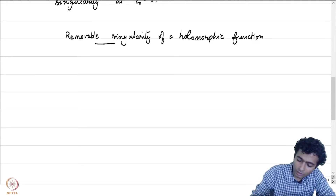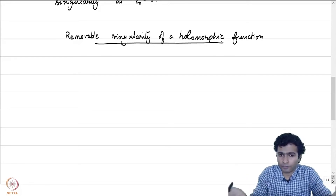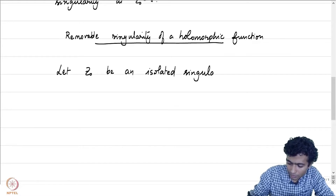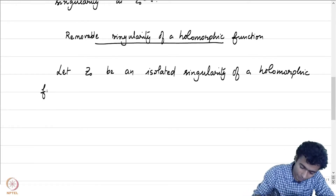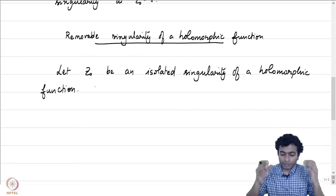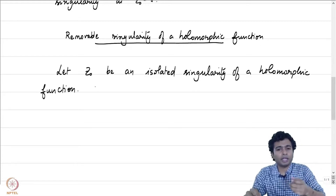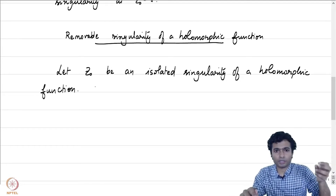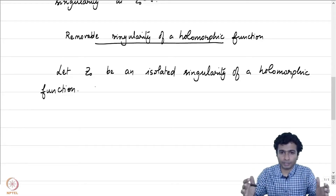Notice that this is an attempt to classify isolated singularities. Let z0 be an isolated singularity of a holomorphic function. We say that the point z0 is a removable singularity if our function f can be extended to the entire disk D(z0, r). Remember that the moment it is an isolated singularity, there is some r such that f is defined and holomorphic on D(z0, r) minus {z0}. A removable singularity means we can extend it to the entire disk D(z0, r).